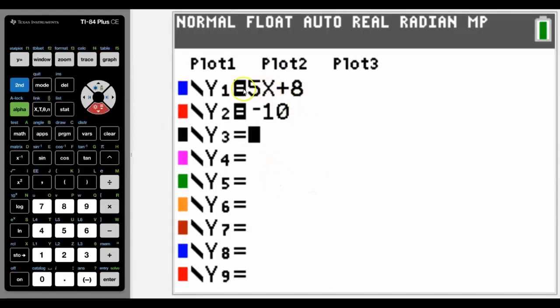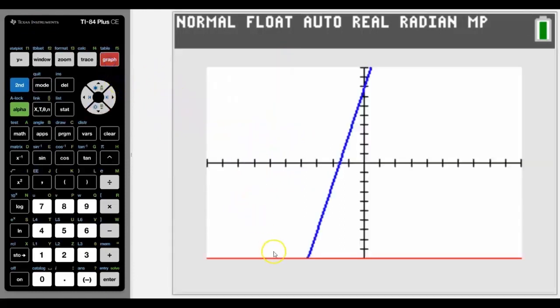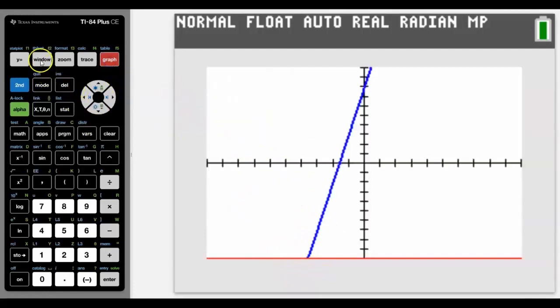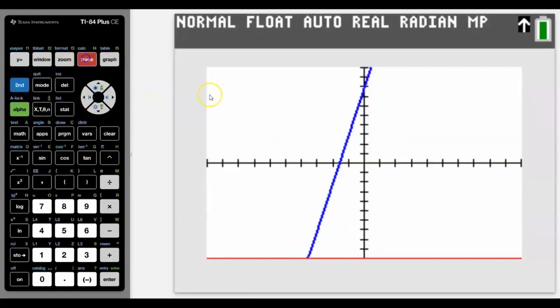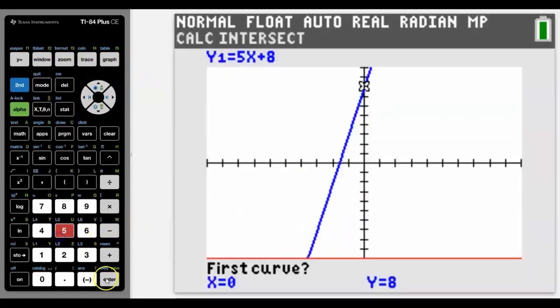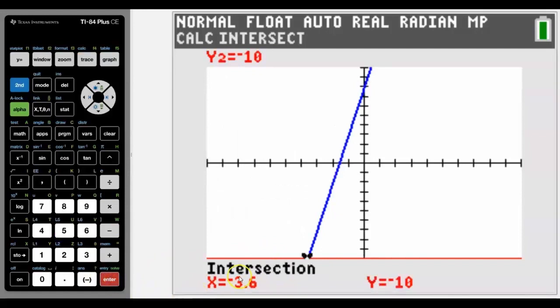So one way to do this is to graph each side of the equation and then see where they intersect. We just got it on the screen here, we would normally maybe have to adjust the window but we can see that they both fit on. And then do intersect and we would find the x answer once I've chosen both lines where they intersect, and it's negative 3.6.